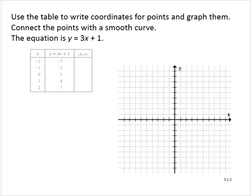And we're given this table of values, and so we see that when x is negative 2, y is negative 5. So we can write the coordinates of a point as negative 2, negative 5. When x is negative 1, y is negative 2. When x is 0, y is 1. When x is 1, y is 4. And when x is 2, y is 7.